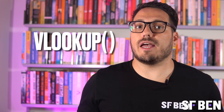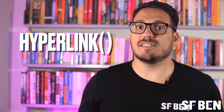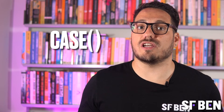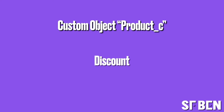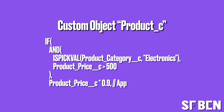Lastly, we have advanced functions — these are more specialised. VLOOKUP helps you find values in a table, HYPERLINK creates clickable links, and CASE lets you tackle complex conditional logic. For example, with a custom Product object containing price and category fields, if the product belongs to the electronics category and its price is above $500, you can apply a 10% discount using a CASE formula field; otherwise, no discount is applied.